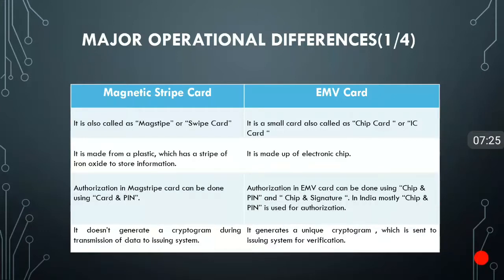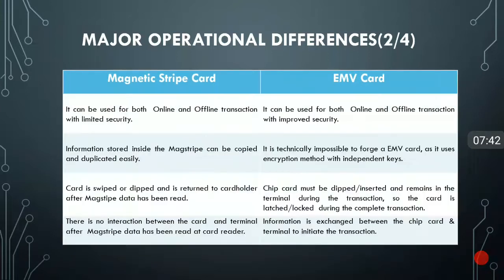The magnetic stripe card does not generate a cryptogram — it holds static data and does not generate anything dynamic during transmission to the issuing system. But in case of EMV, it generates a unique cryptogram in each transaction while transferring data to the issuing system.